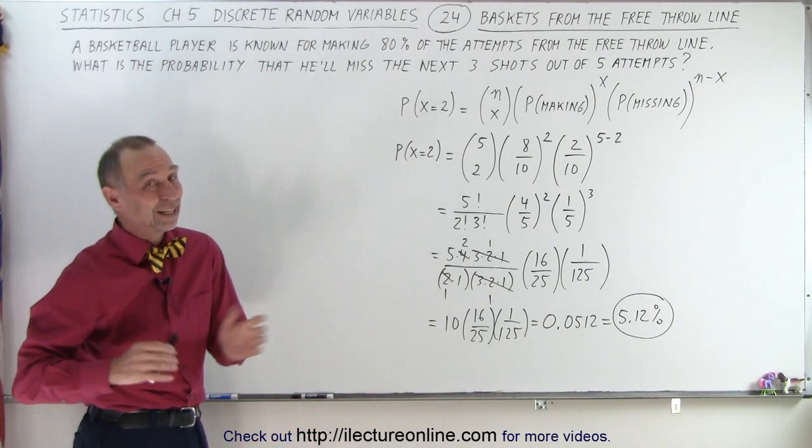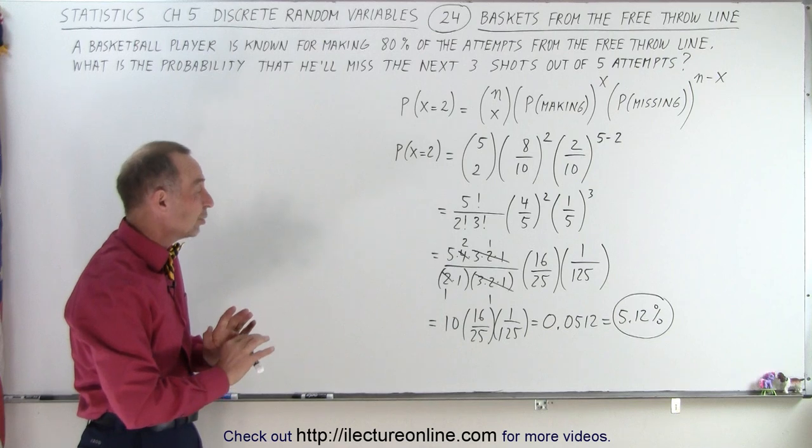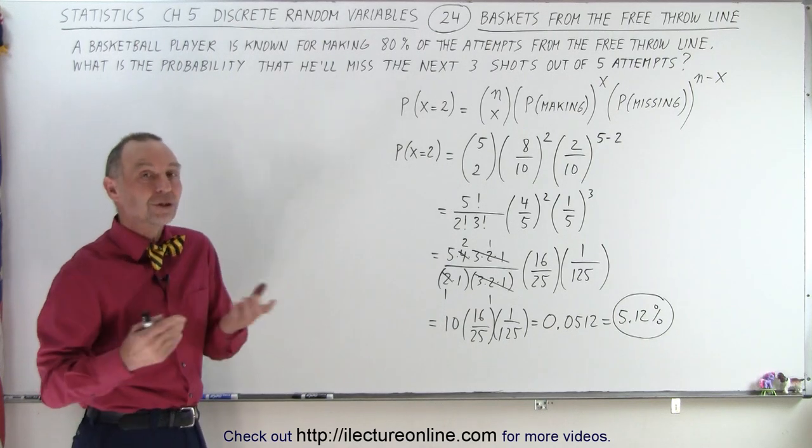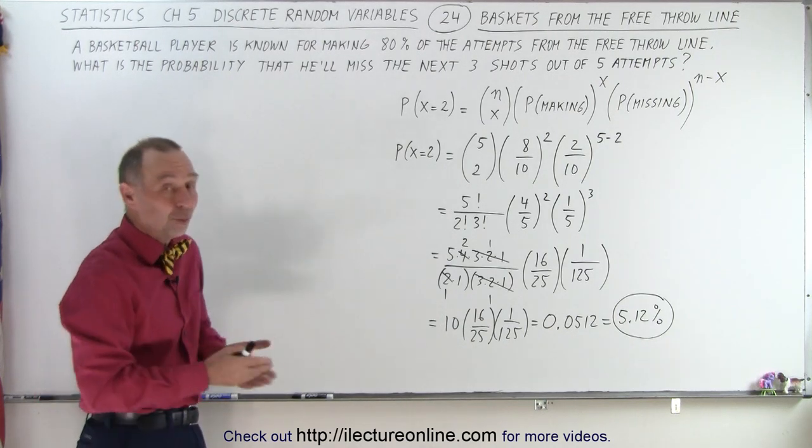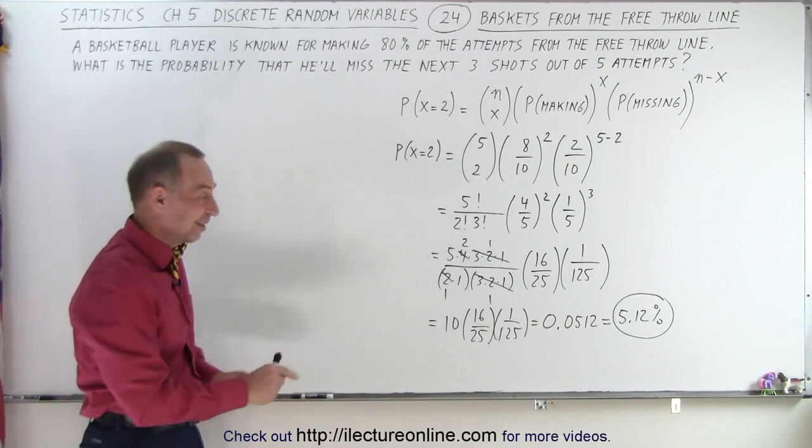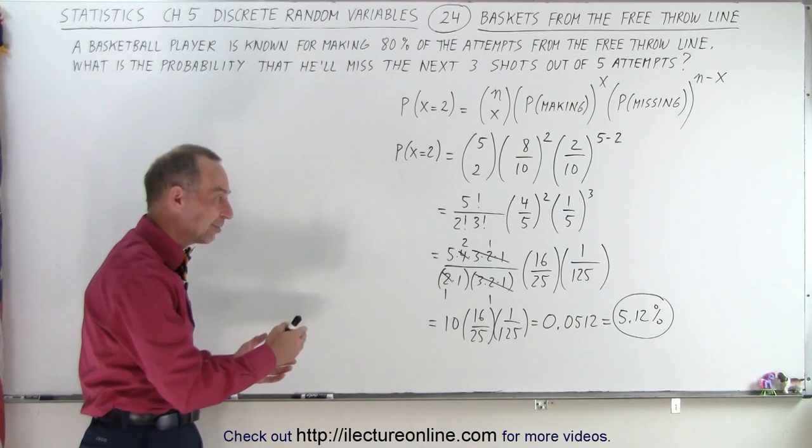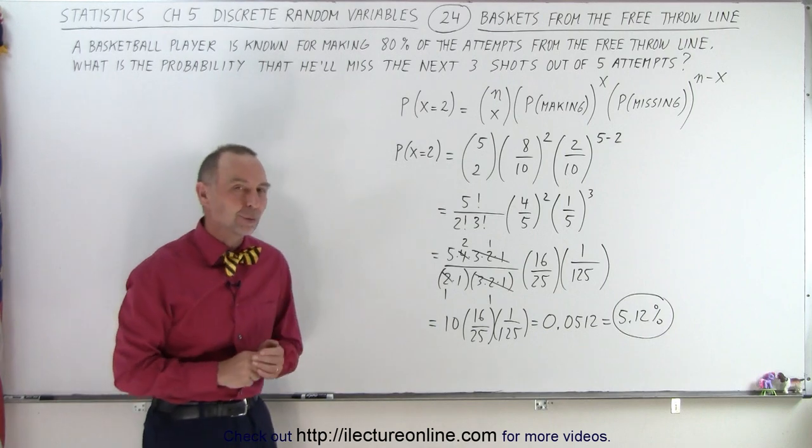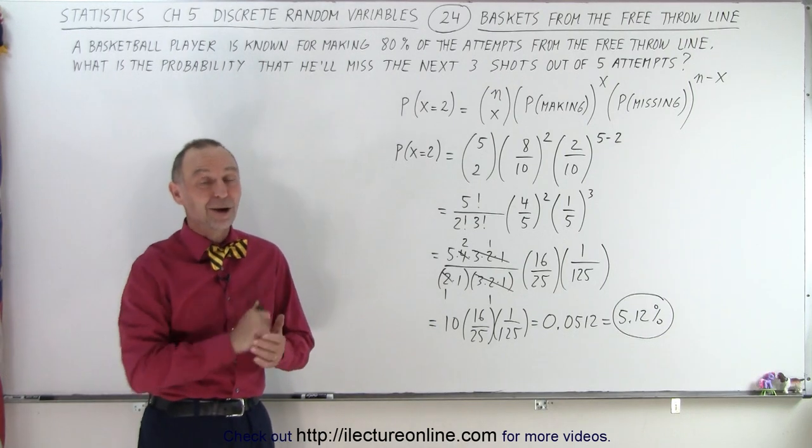0.0512, which is 5.12%. So that means that the probability that he'll miss three out of the next five shots is about 5%. 95% of chance that he will not do so. That will have another combination. He'll miss more or he'll miss less. But the probability that he'll miss three and make two in the next five attempts is about 5.12%. And that is how it's done.